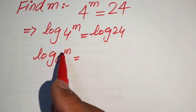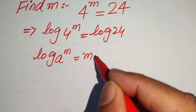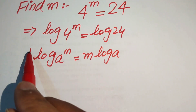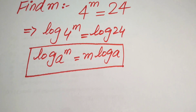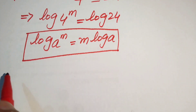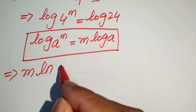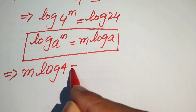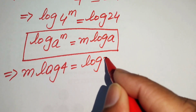According to this property of log, we move the exponent m to the front of the log, and it is written as m times log. So we use this property on the left-hand side and write it as m times log 4 is equals to log of 24.